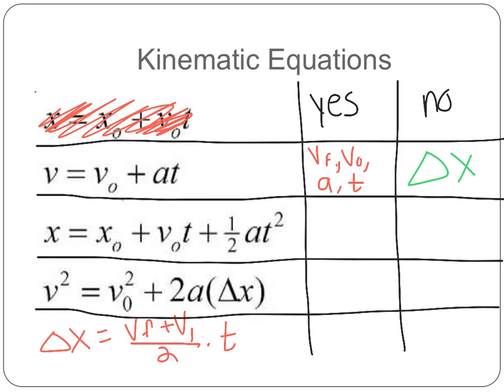All right, next one. In this equation, I have delta x. We can actually just make this delta x. I have V0, I have t and a. What don't I have? I do not have Vf. So if I have Vf in a problem or looking for it, I'm not going to use this equation.